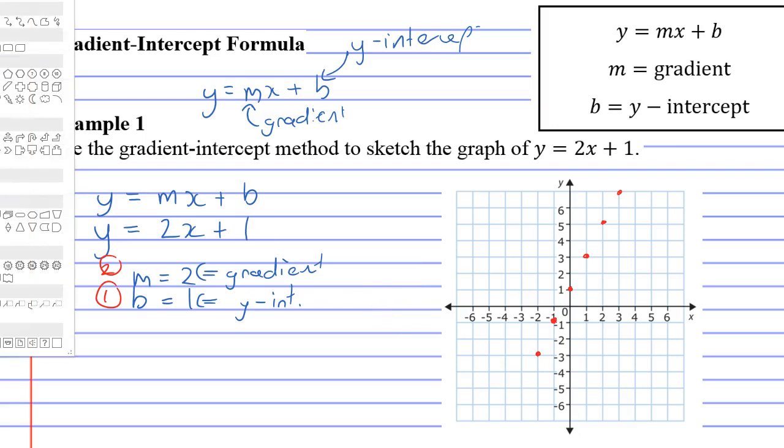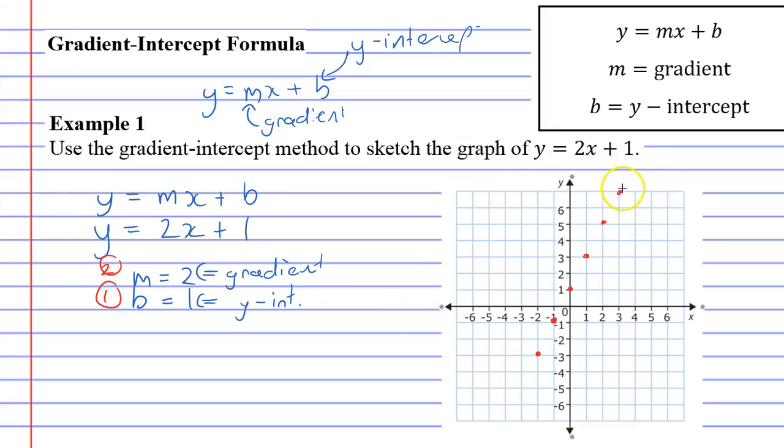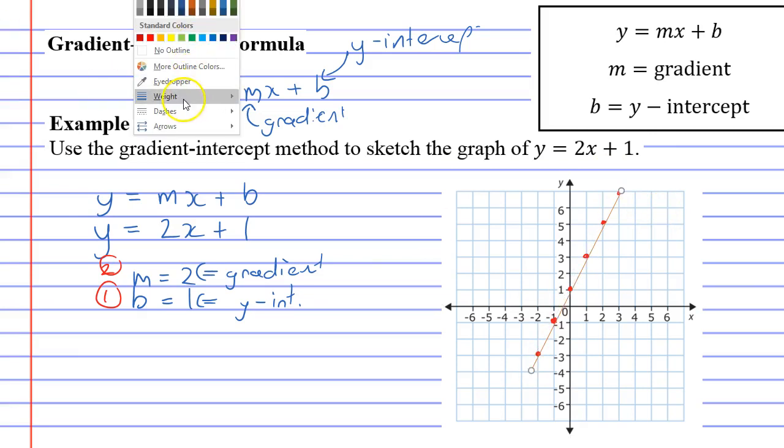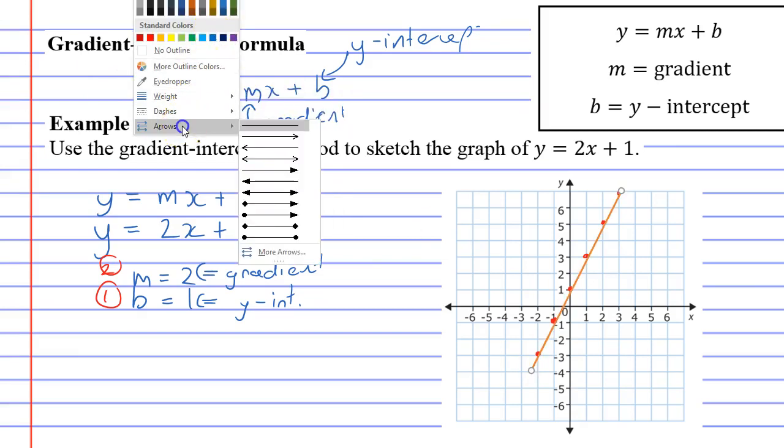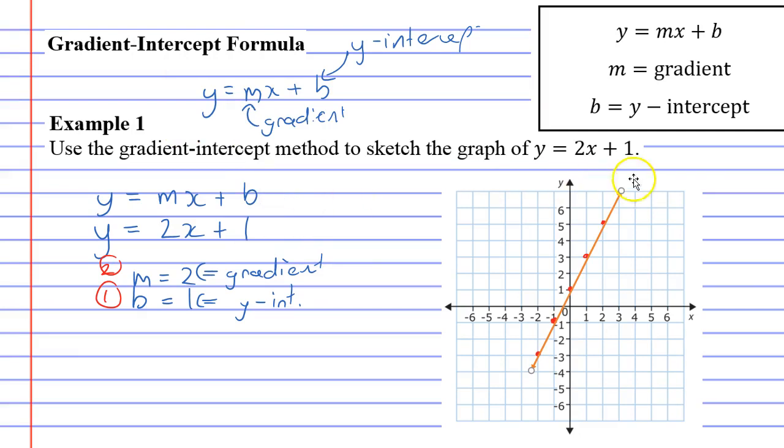Let's draw a line over this to show our nice straight line. Arrows at either end.